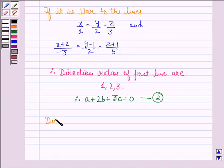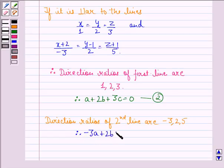Direction ratios of second line are minus 3, 2, 5. Therefore, minus 3A plus 2B plus 5C is equal to 0 and this we call equation 3.